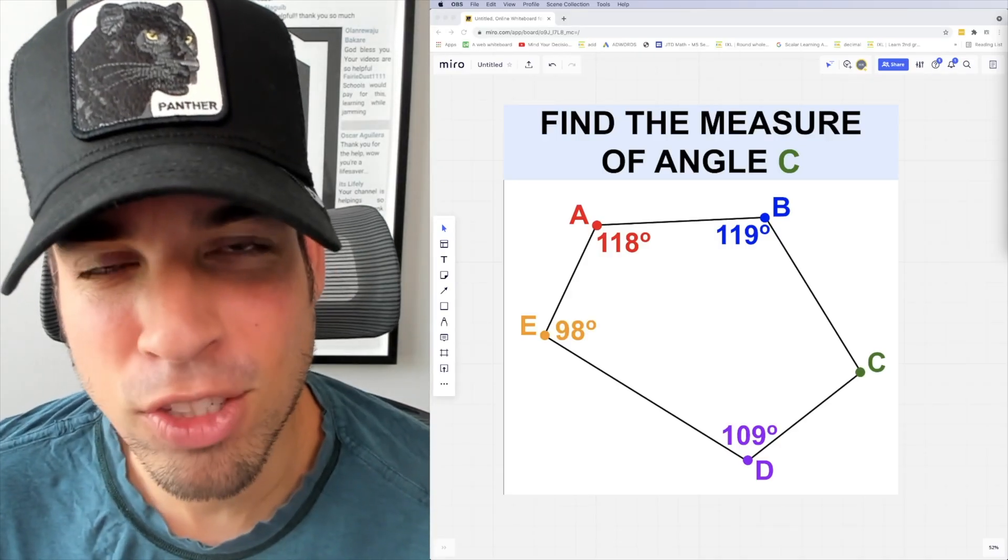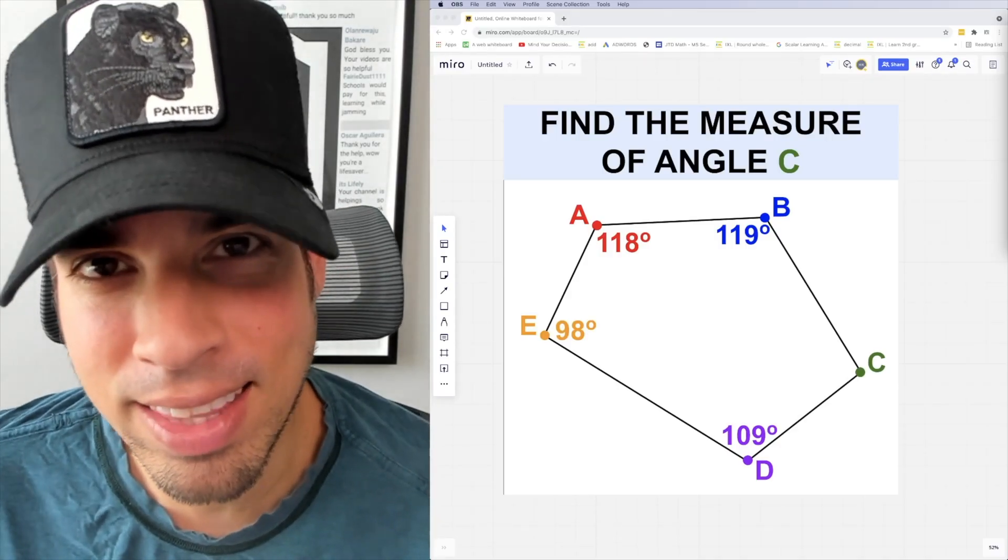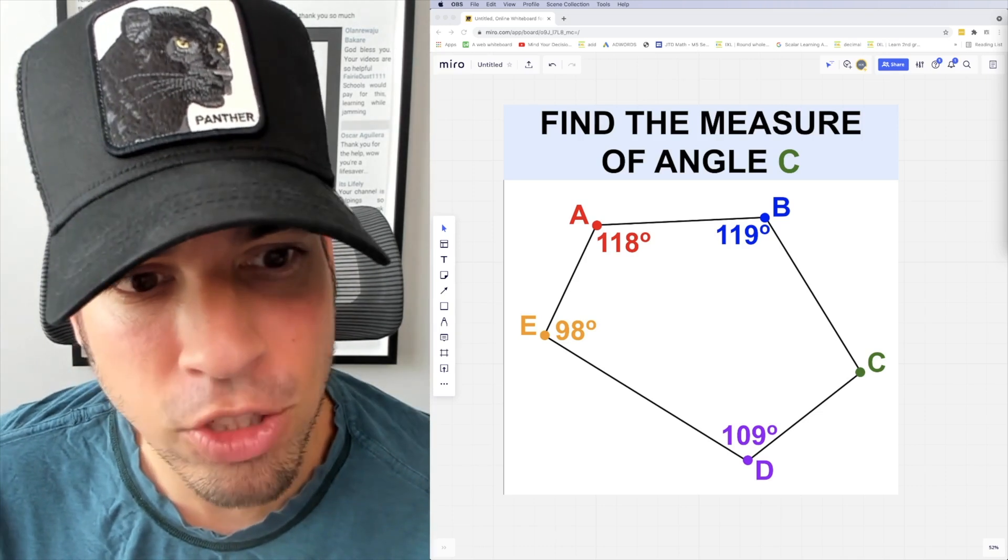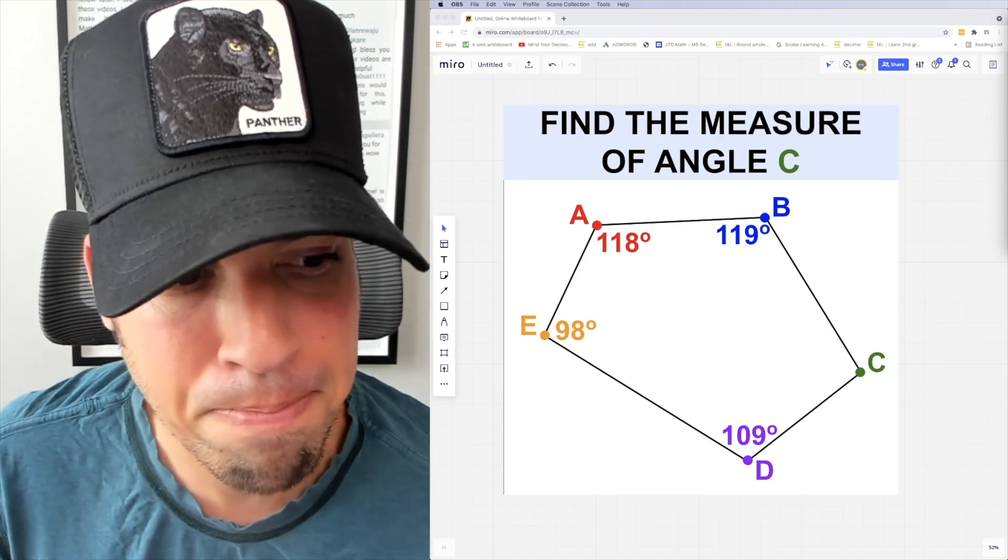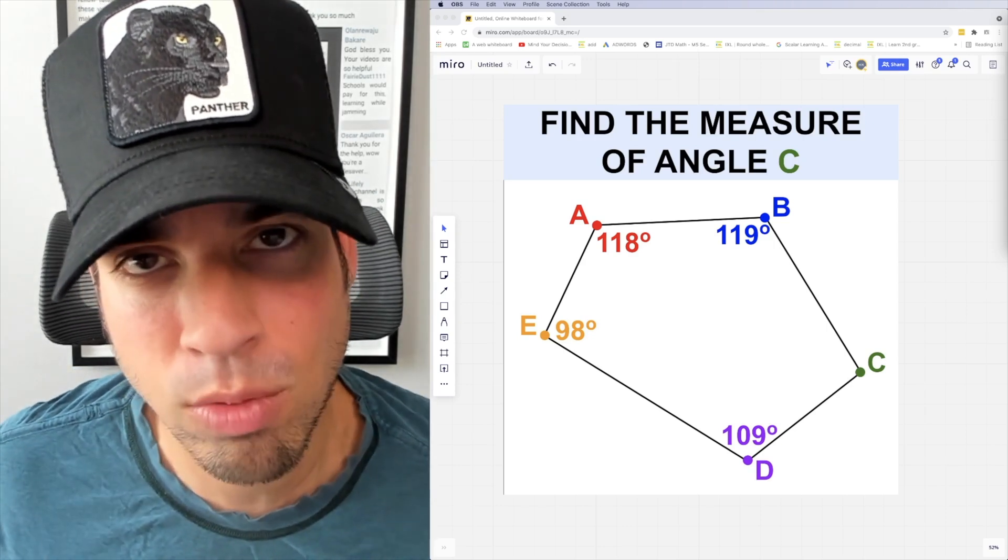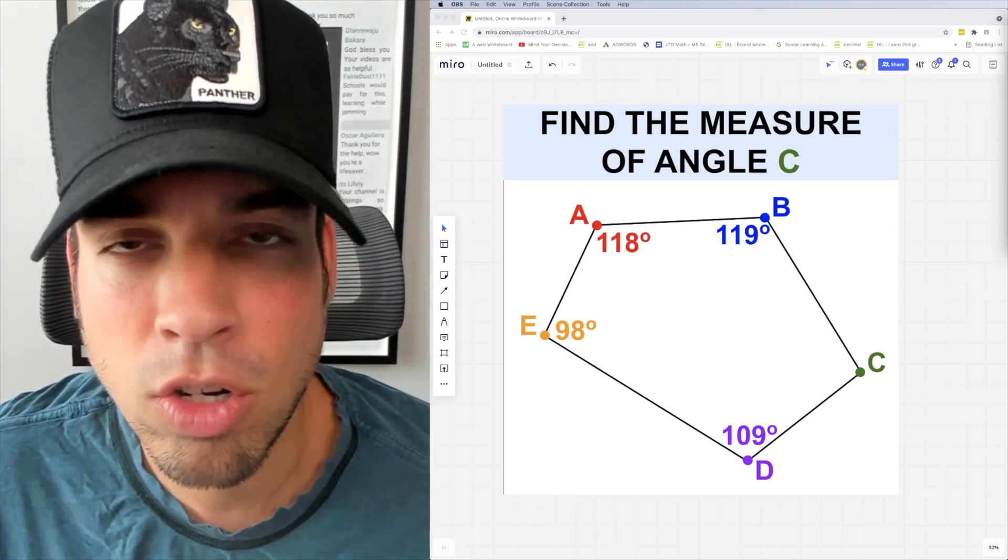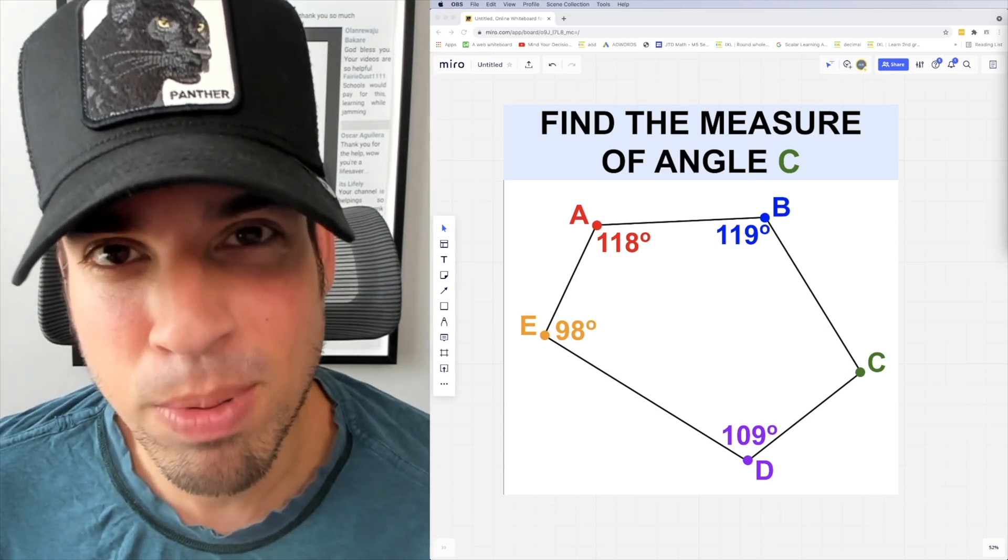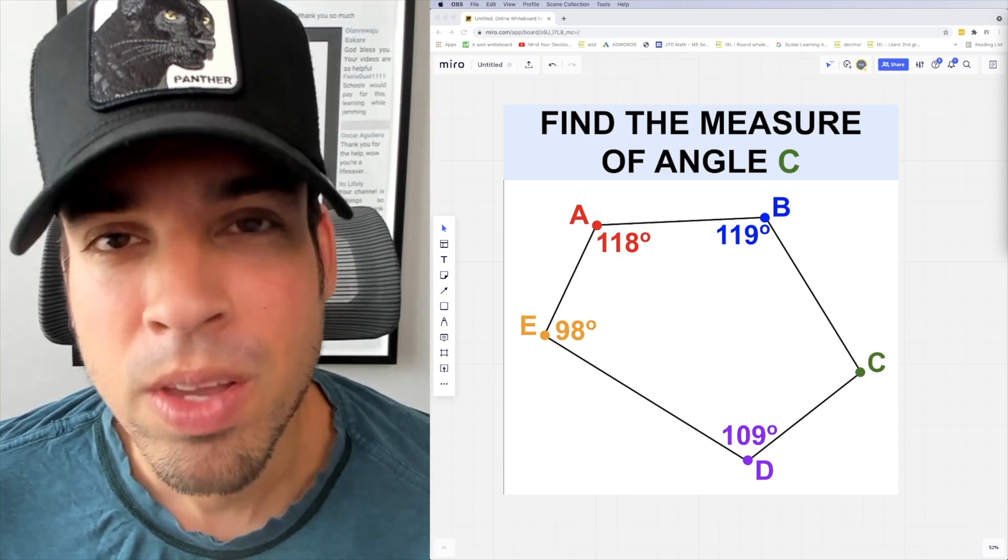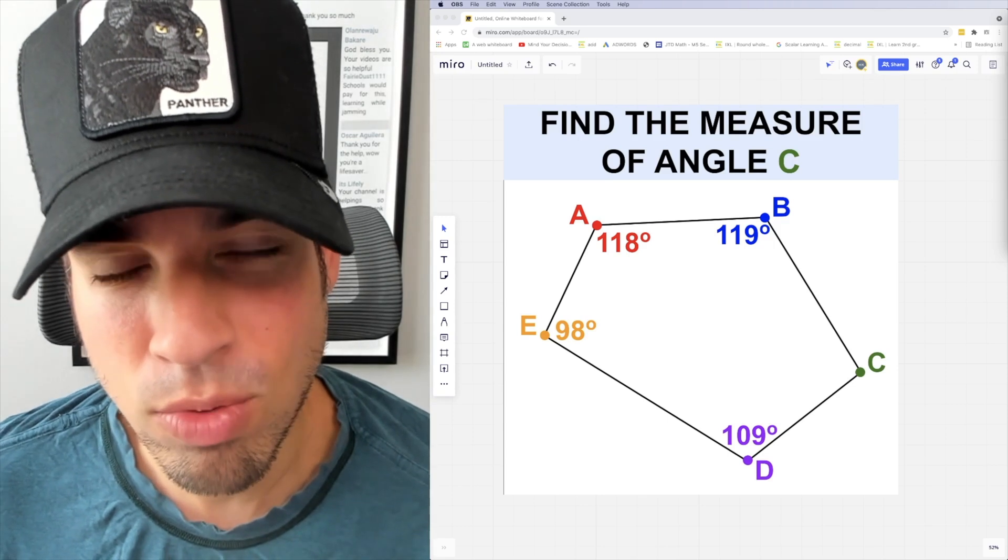What's up everybody and welcome back to another math puzzle. In this one, the question is to find the measure of angle C. Just in case you didn't recognize it, this is a pentagon, it's just not a regular pentagon, which means all the angles and all the sides are not equal to each other. Go ahead and hit that pause button and see if you can figure it out. When you're ready, hit play and I'll give you the explanation.